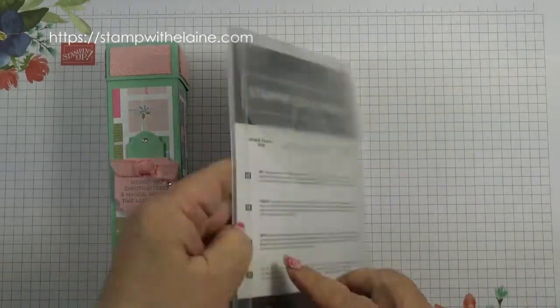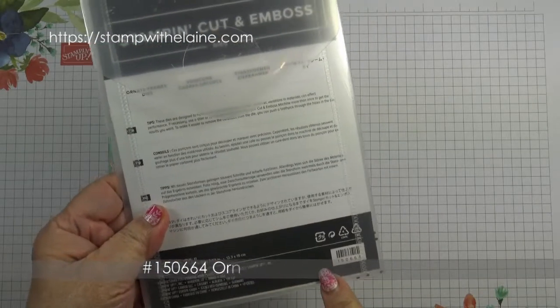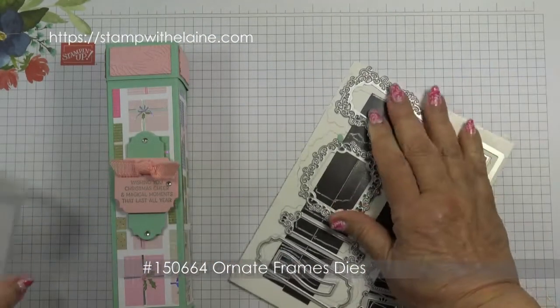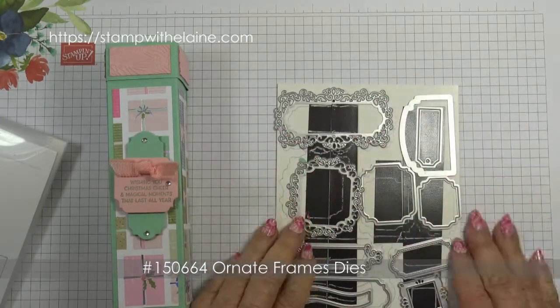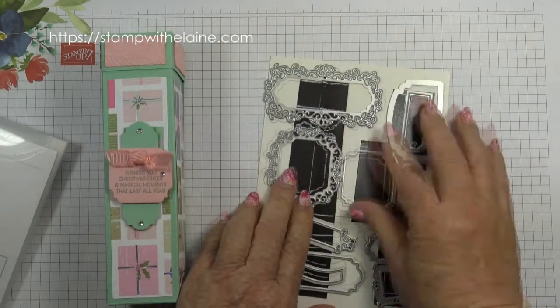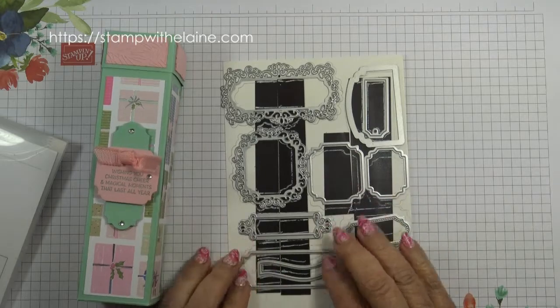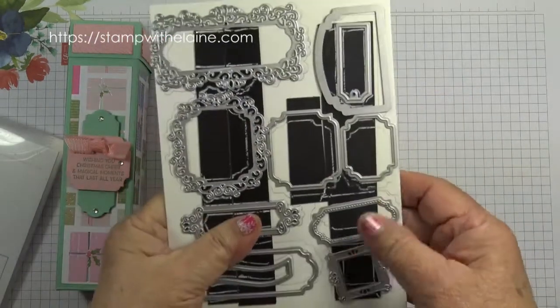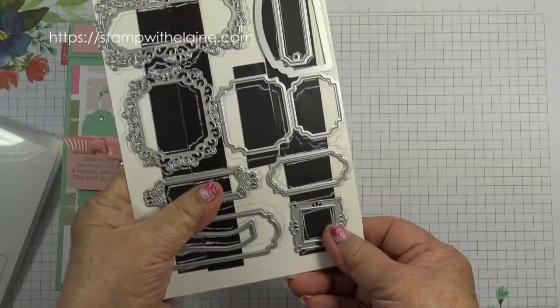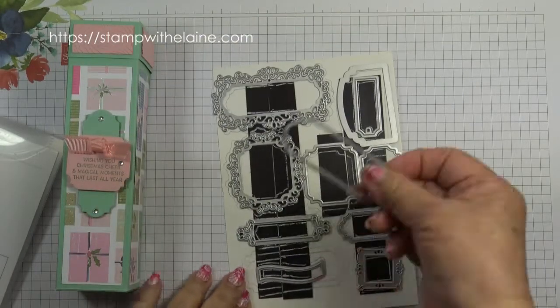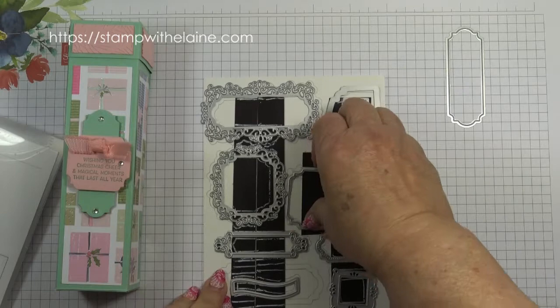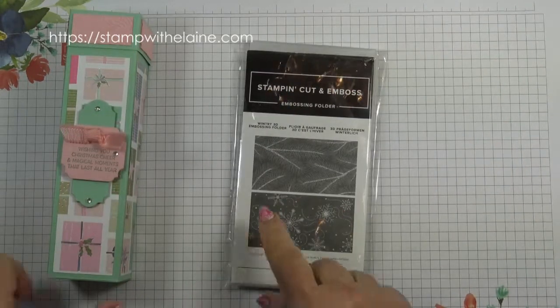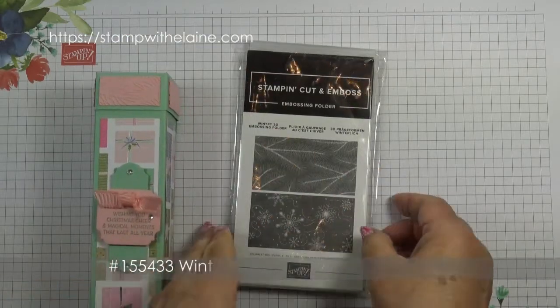I'm also going to be using the Ornate Frames dies which were introduced a couple of catalogues back. I can't remember when, but it was also part of a Halloween set. I think the stamps retired but the frames are still available. And the dies I used is this one and this one. I also used the Wintry 3D embossing folder.